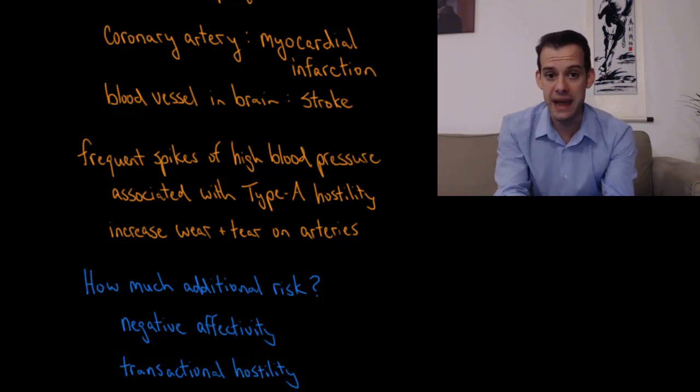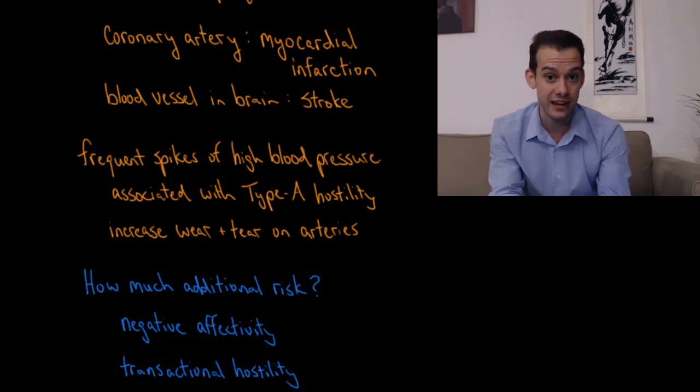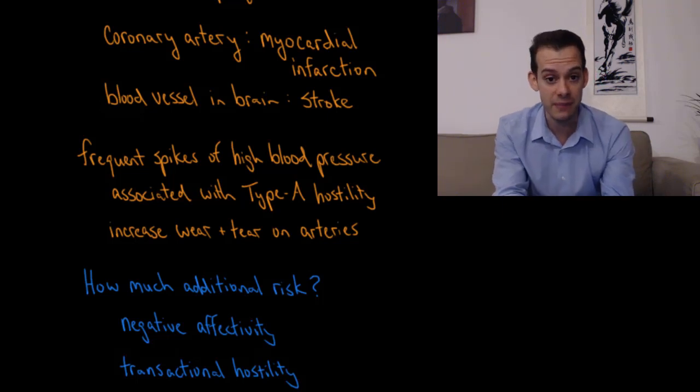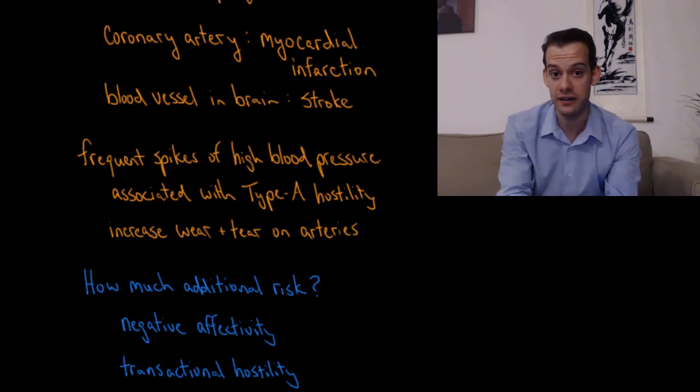So this atherosclerosis increases the risk of both of these very serious potentially fatal illnesses, and the frequent spikes in blood pressure that we see amongst people with this type A personality not only increase the wear and tear on the arteries and the potential for inflammation, but we also have the increased risk of breaking off a piece of this unstable plaque.